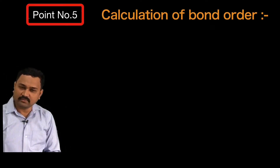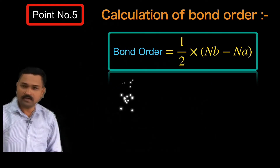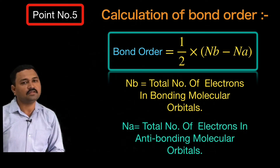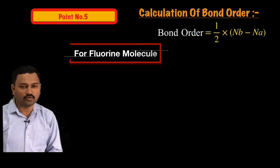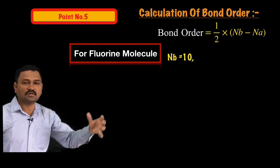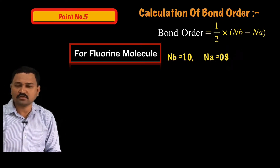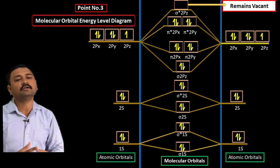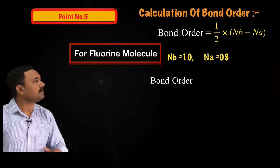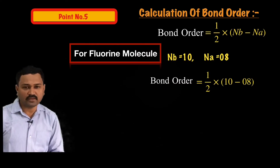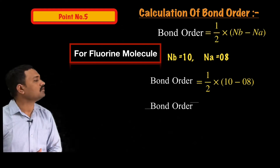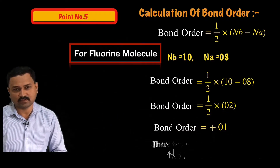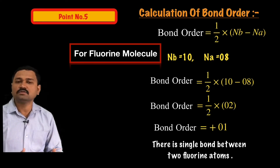Point number five: the bond order. Bond order is given by the formula: bond order = ½ × (Nb − Na), where Nb is the total number of electrons in bonding molecular orbitals and Na is the total number in antibonding molecular orbitals. For fluorine, Nb = 10 and Na = 8. Therefore, bond order = ½ × (10 − 8) = ½ × 2 = 1. The two fluorine atoms are attached by a single bond.